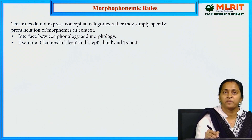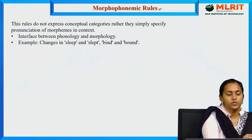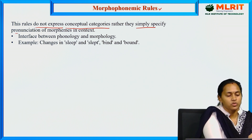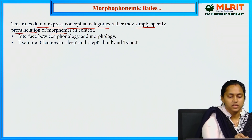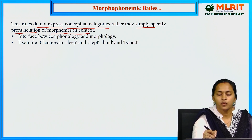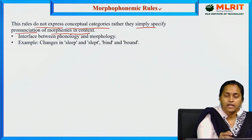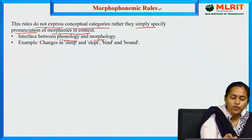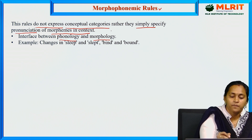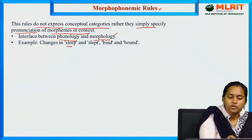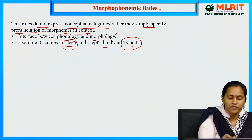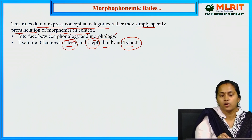The third type is morphophonemic rules. These rules do not express conceptual categories; rather, they specify the pronunciation of morphemes in context. They are an interface between phonology — speech sounds — and morphology — the structure of words. For example: 'sleep' changes to 'slept,' 'bind' to 'bound.' These are morphemes — meaningful short words.